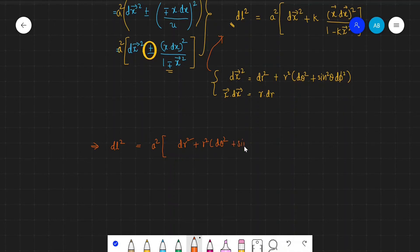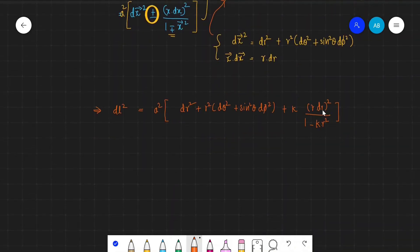...sin²θ dφ² plus r² dr² divided by 1 minus kr². So let's get these dr terms together.